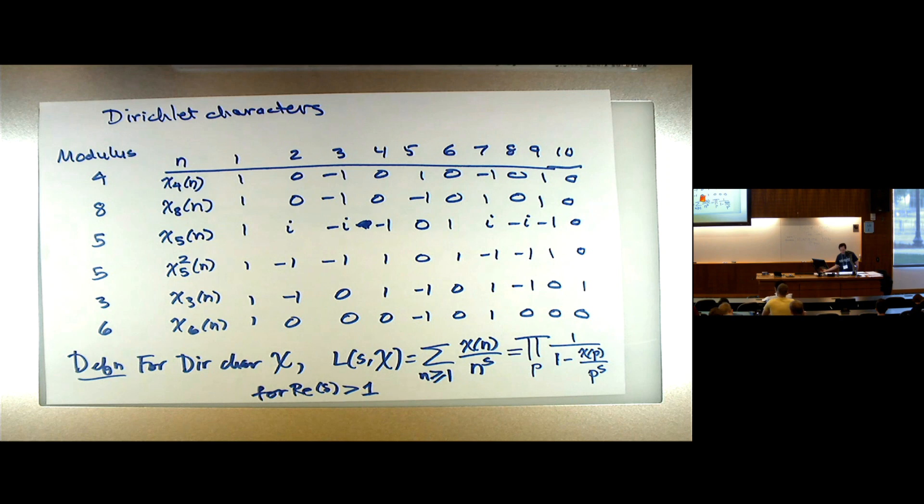So we have this infinite family of cousins of the Riemann zeta function. It turns out that many of the things one can do for the Riemann zeta function you can do for these, often in a very similar way. But these functions, when χ is not trivial, don't have a pole at s = 1 like the Riemann zeta function does — that's a very important difference.